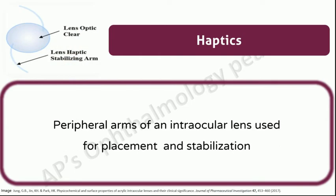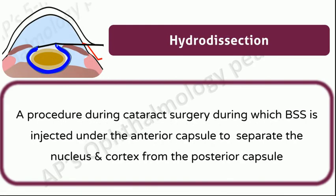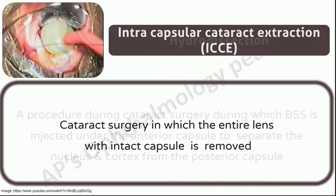Haptics: peripheral arms of an intraocular lens used for placement and stabilization. Hydrodissection: a procedure during cataract surgery during which balanced salt solution is injected under the anterior capsule to separate the nucleus and cortex from the posterior capsule. To see the animation of hydrodissection and SICS, you may click on the link above to watch my video on SICS. Alternately, you can click on the link in the description box.